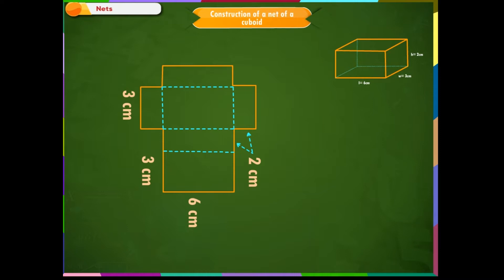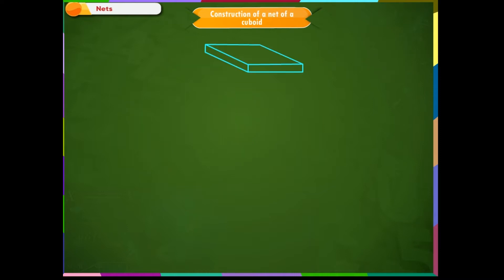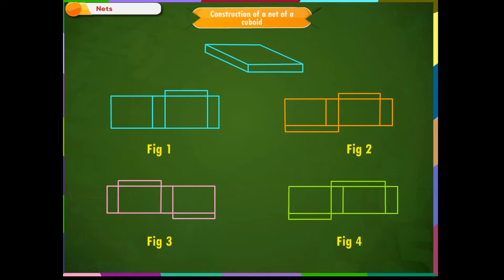One cuboid can have several net patterns. For the cuboid shown on the screen, these are the four possible nets. We need to visualize the folding and unfolding process mentally.